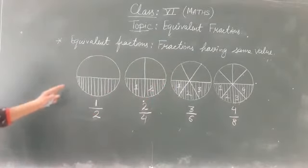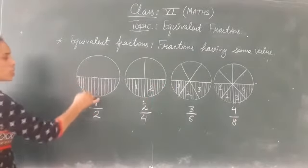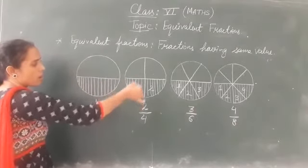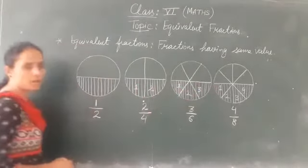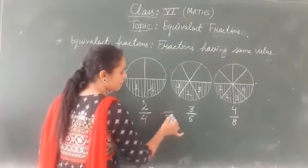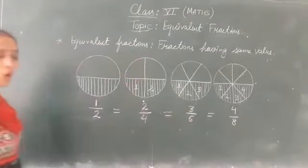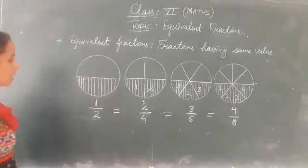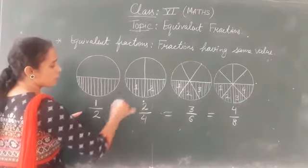Now you can see that in every picture half portion is shaded. In this circle also half, half, half and half. It means all are representing half. So these all are equal. Now see how we can get these equivalent fractions.